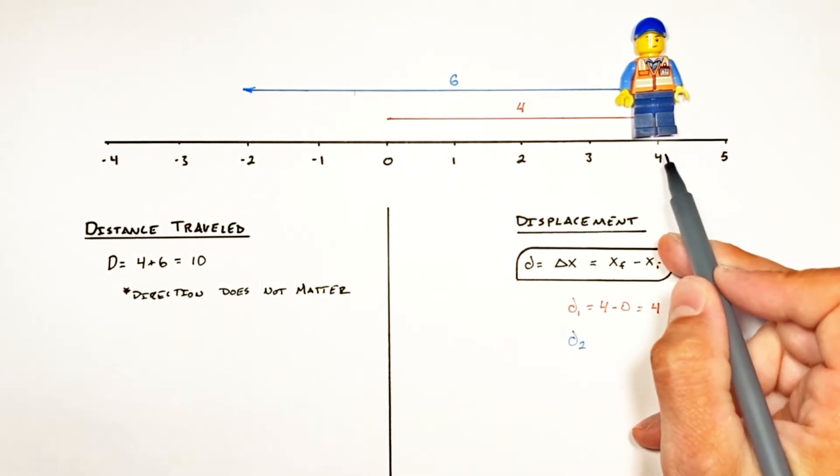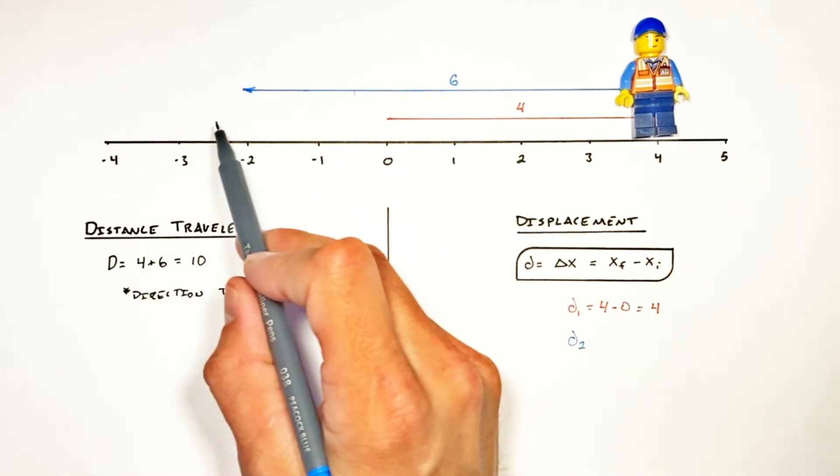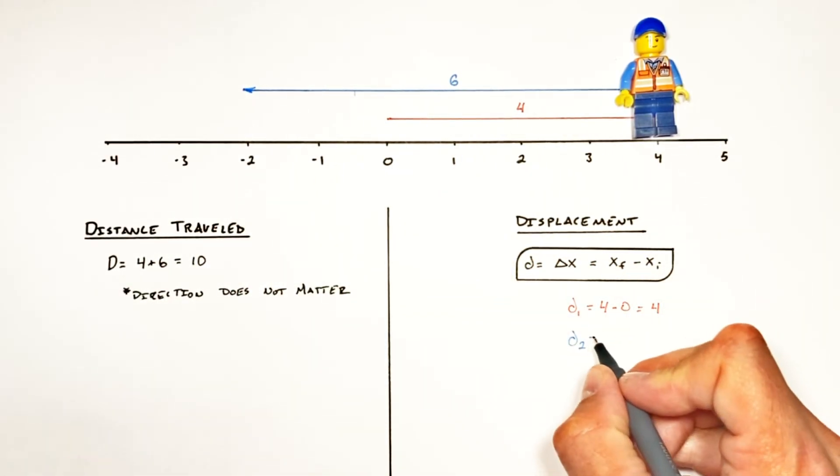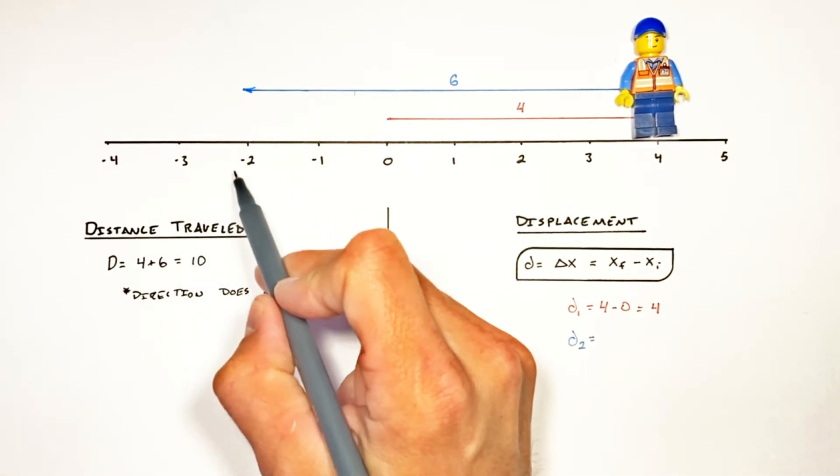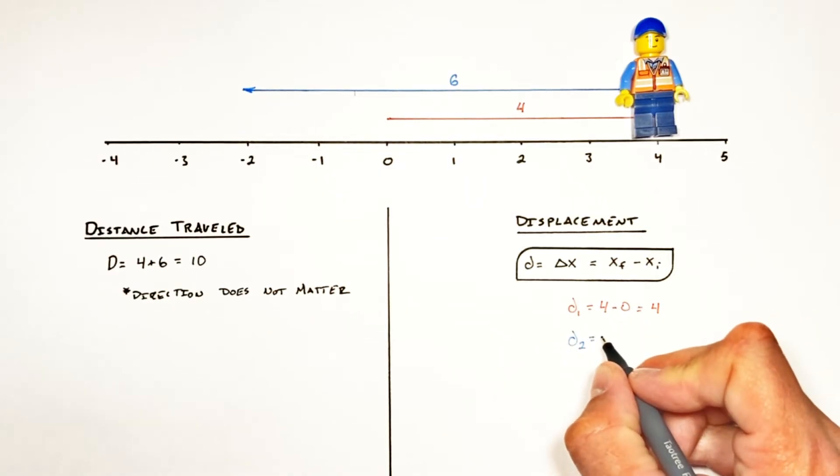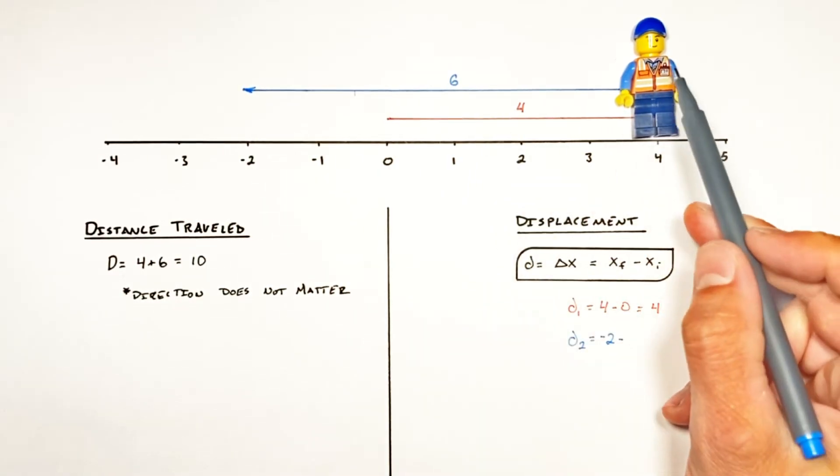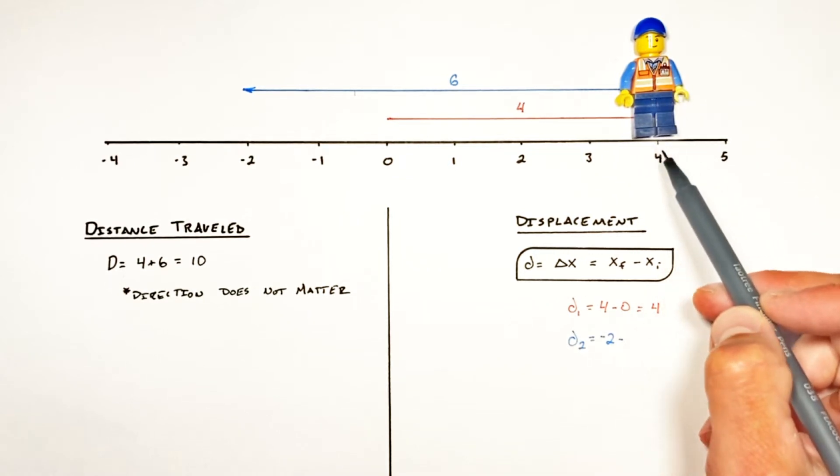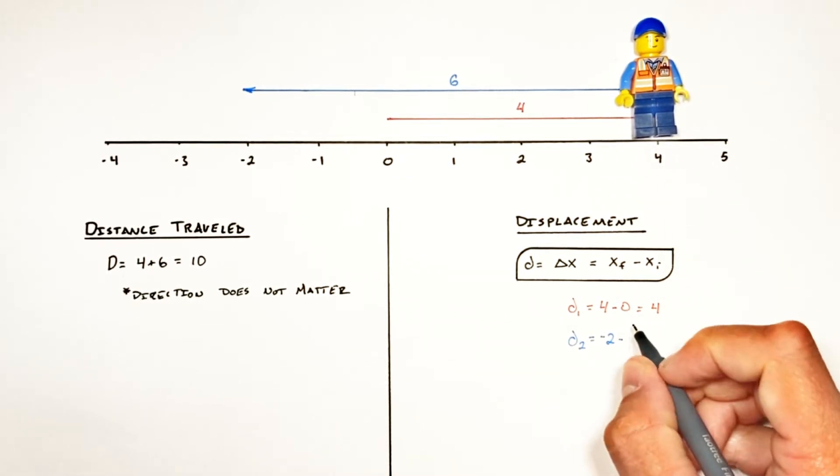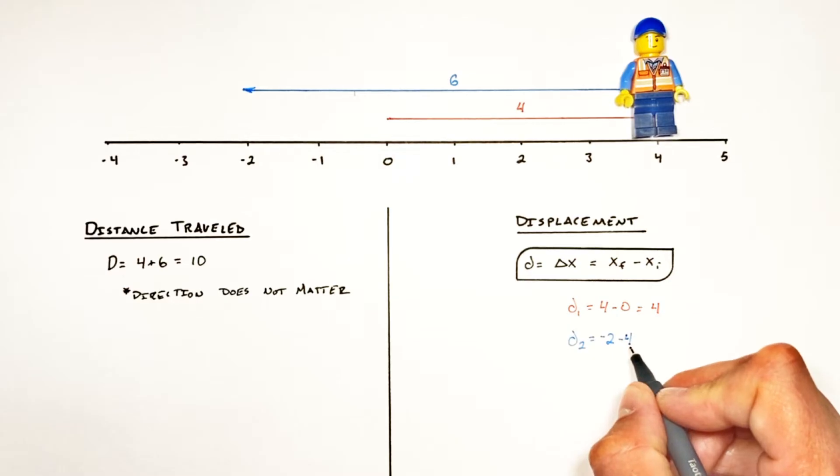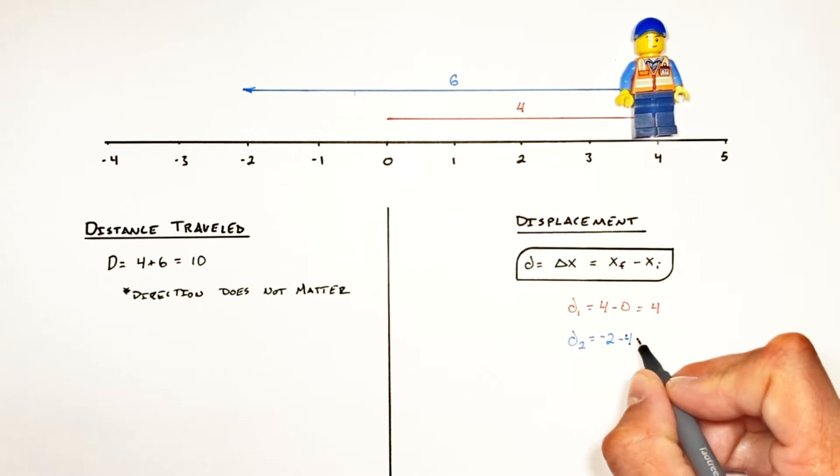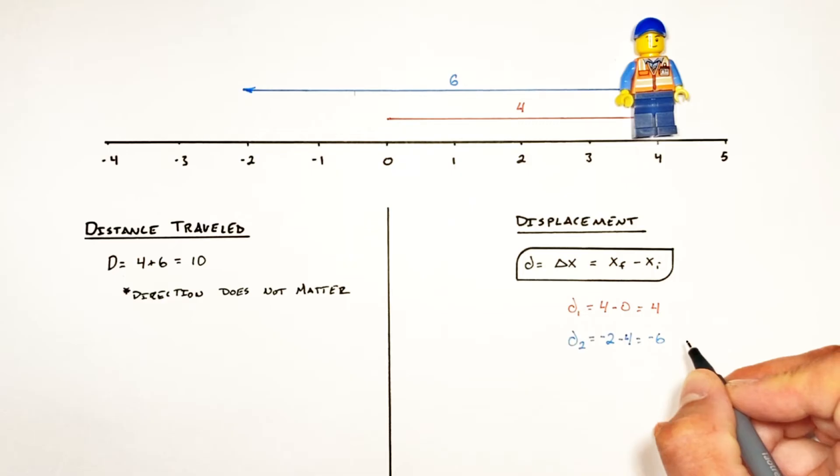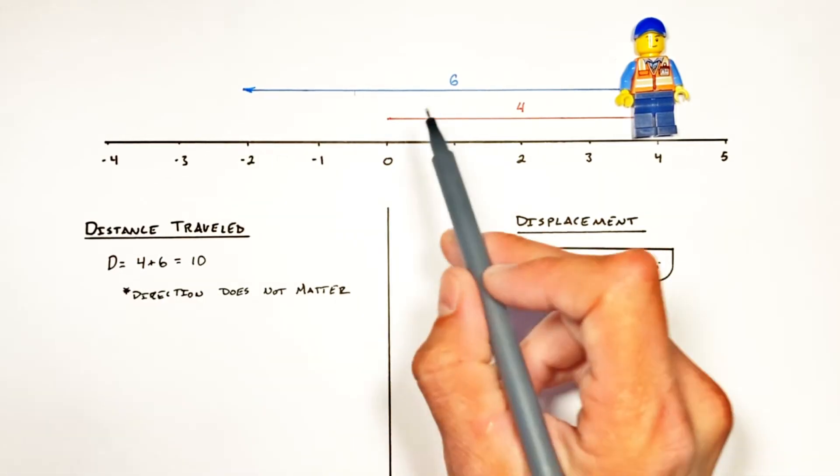Then over the second phase of motion, he started at a position of four and went all the way over here to negative two. So our final position over here is going to be negative two minus our initial position, which isn't zero. Realize this second phase of motion started over here at a position of four. So he's at an initial position of four.